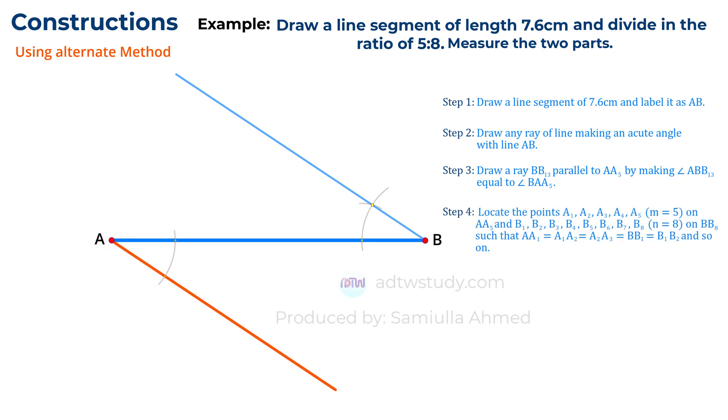To do this, take a compass, adjust it to a specific length, and divide the line into 5 equal segments. Label these points as A1, A2, and so on up to A5. Similarly, without changing the compass's length, divide the other inclined line into 8 equal parts.